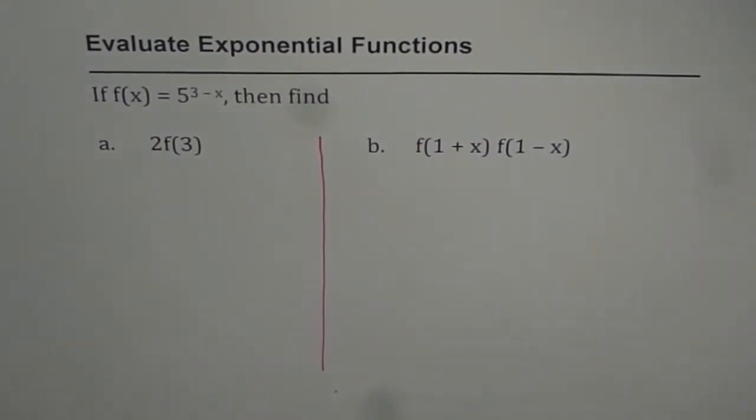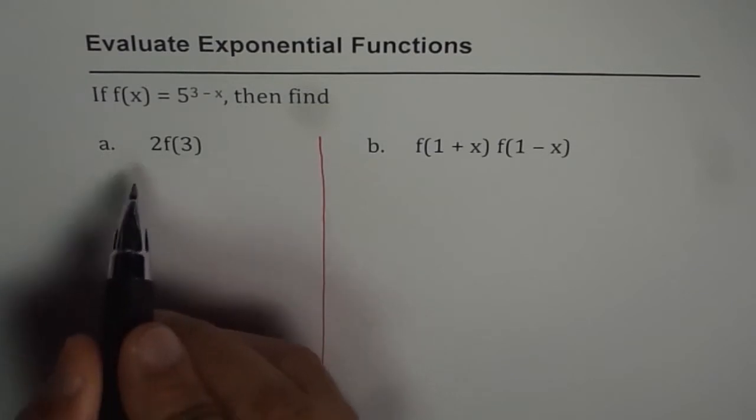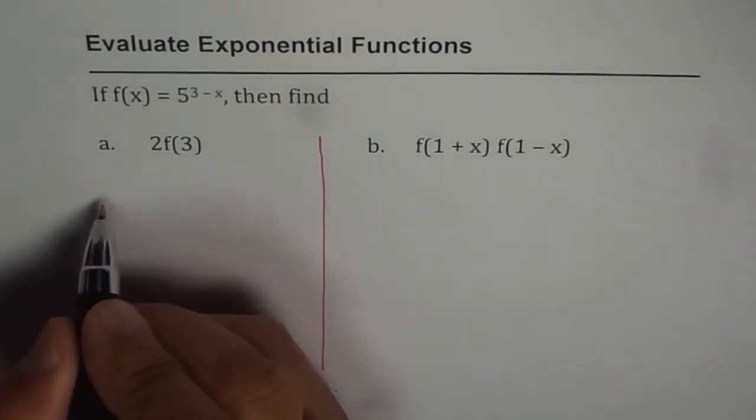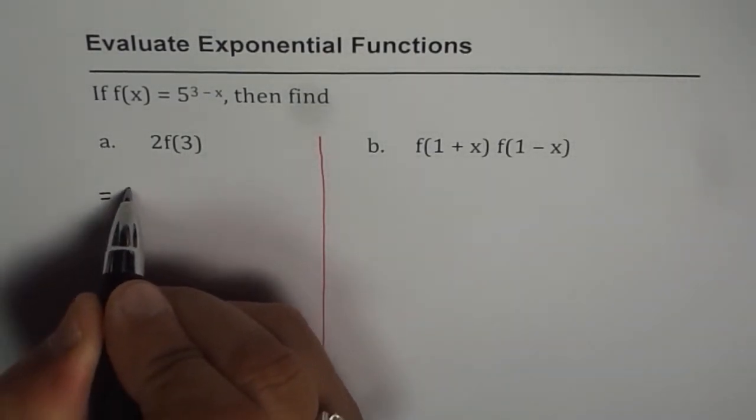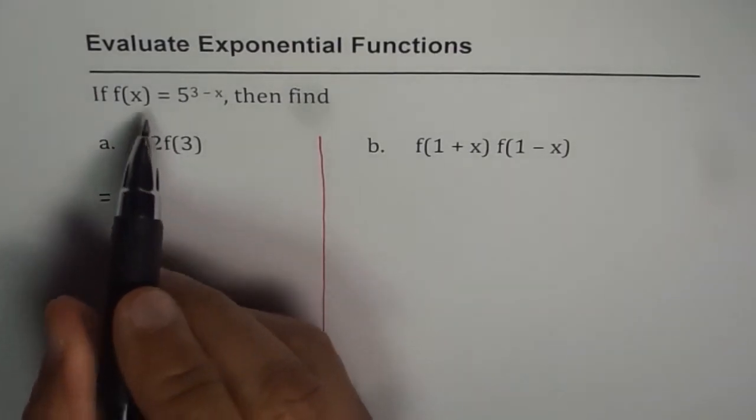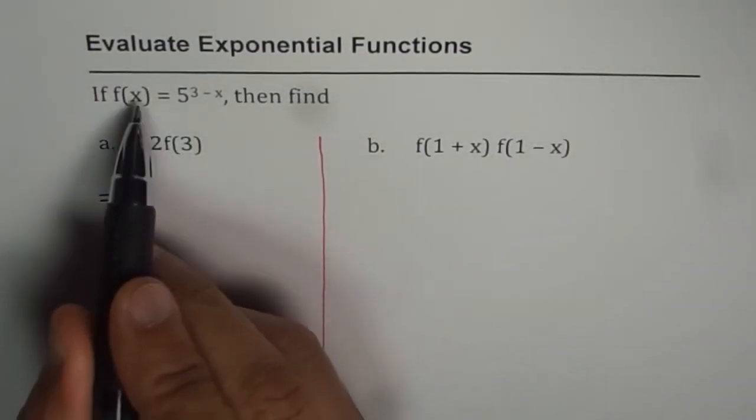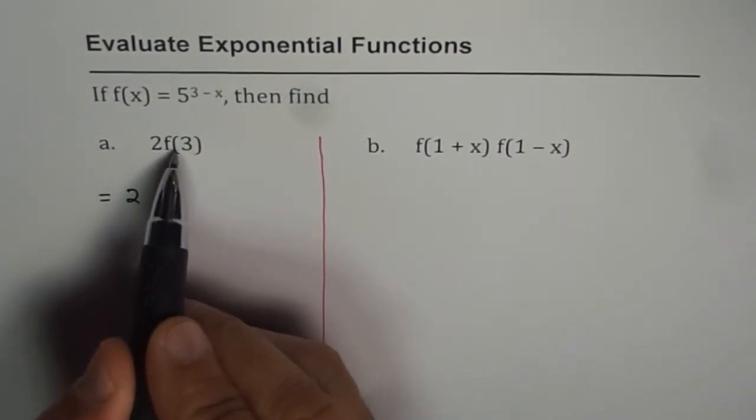I hope you remember function notations. We will apply function notations to evaluate 2f(3). When we say 2 times f(3), that really means 2 times the value of the function at x equals 3. That is f(3).